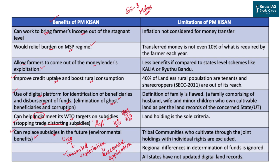The limitations of PM Kisan: first, inflation is not considered for the money transfer — 6,000 rupees in 2019 is not the same value in 2022. The government should have used the Consumer Price Index of rural India as a benchmark for the transfer amount. Second, the transferred money is not even 10% of what is required by the farmer each year. While this 10% is the basic amount apart from subsidies, there are distortions and regional disparities in subsidy transfer. Farmers across India would benefit more if the transfer amount were higher.